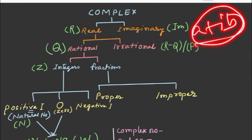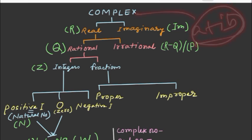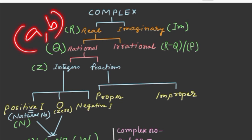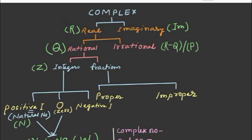So what are the real numbers? Real numbers include values like 2. And real numbers are divided into rational and irrational numbers.